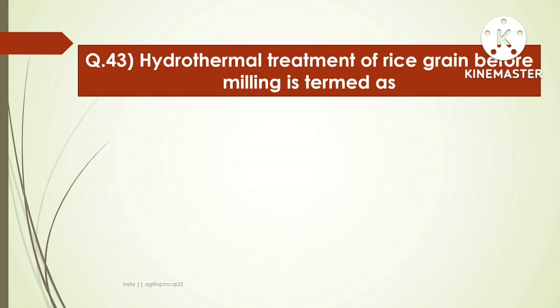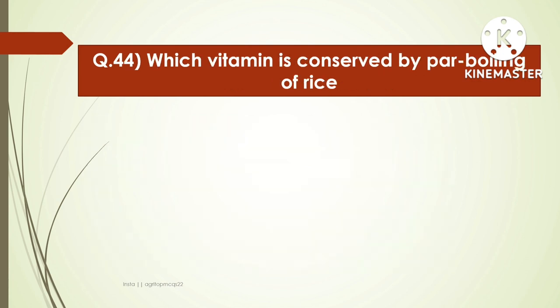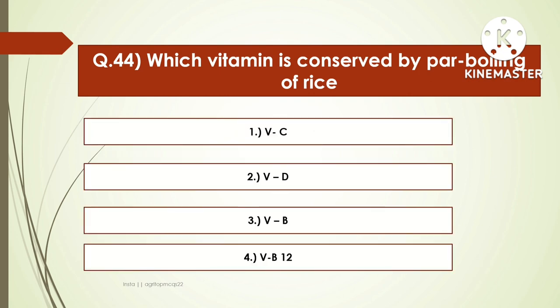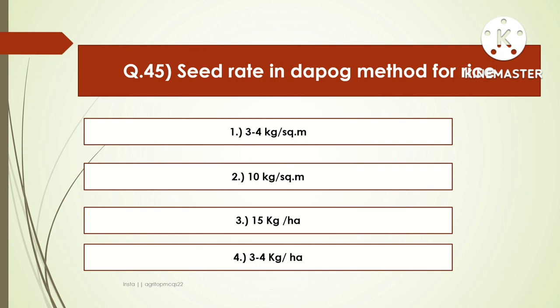The next question is: hydrothermal treatment of rice grain before milling is termed as — options are boiling, parboiling, water treatment, or none of these. The right answer is parboiling. The next question: which vitamin is conserved by parboiling of rice? Options are vitamin C, vitamin D, vitamin B, vitamin B12 (cyanocobalamin). The right answer is vitamin B12. Parboiling in rice is done for conserving vitamin B12. The next question: seed rate in the depot method for rice is — options are 3-4 kg per square meter, 10 kg per square meter, 15 kg per hectare, or 3-4 kg per hectare. The right answer is 3-4 kg per square meter.